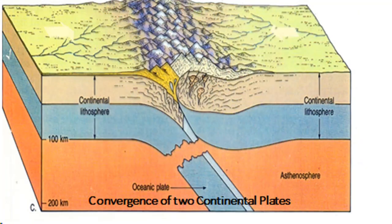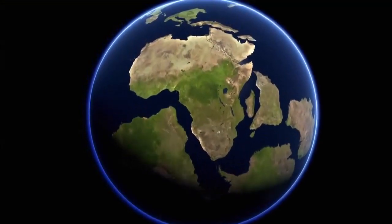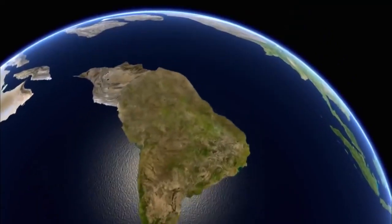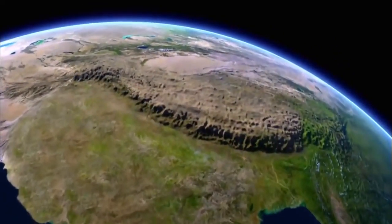The third type of convergent boundary is the convergence of two continental plates. Continental-continental convergence occurs when two continents meet head-on. This type is different from oceanic-oceanic convergence, as continental crusts are too light to slide down into a trench; neither plate is pushed underneath the other. The result is the formation of tall mountain ranges. The Himalayas, known as Earth's highest mountain belt, are an example of mountains that rose when India collided with the Eurasian continent.